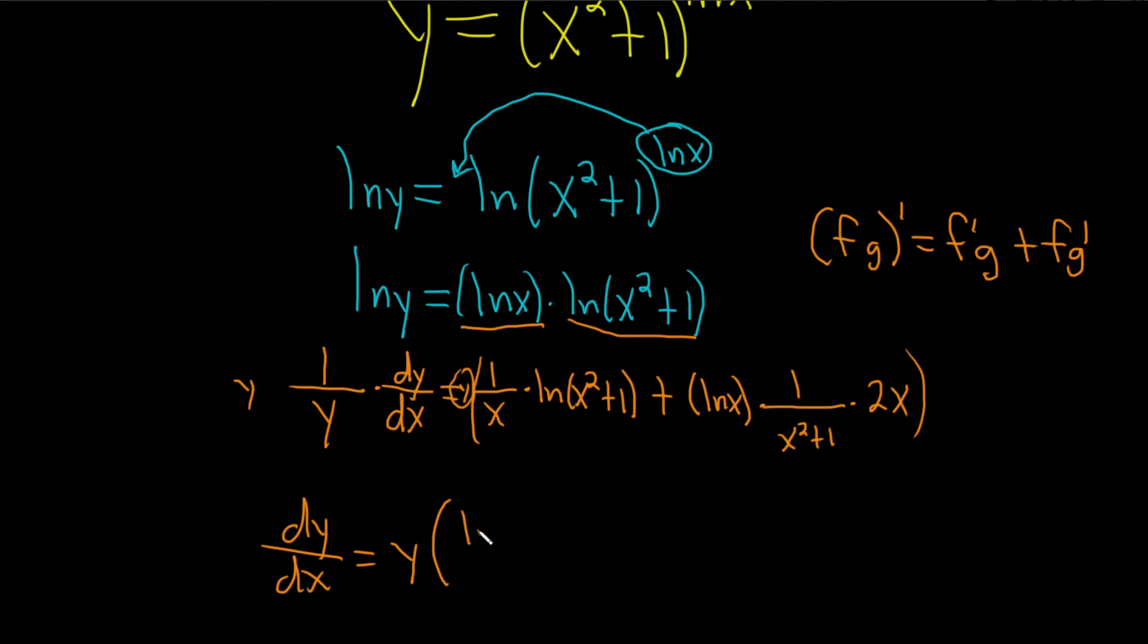And then we have ln of x squared plus 1 over x, plus we have 2x. Times ln x, I'll put that upstairs, so 2x ln x, and it's all over x squared plus 1, and then we have a parenthesis.